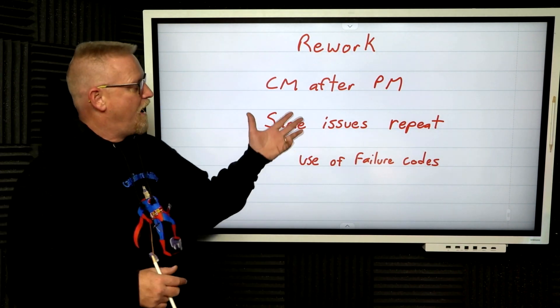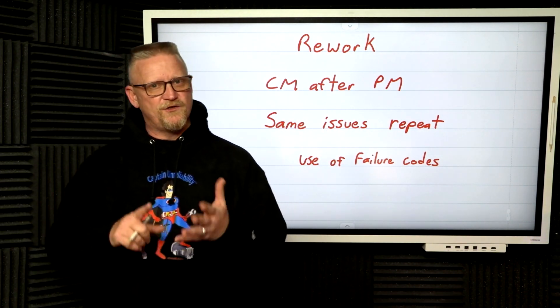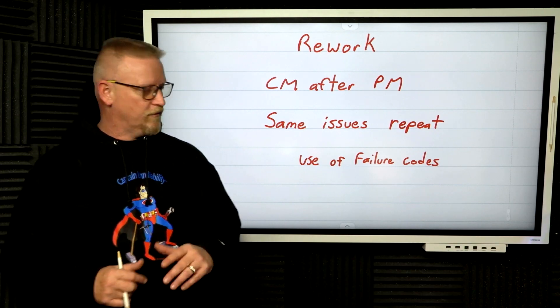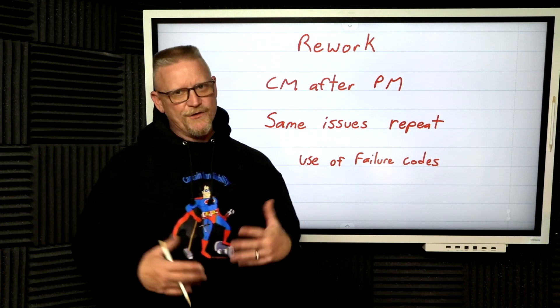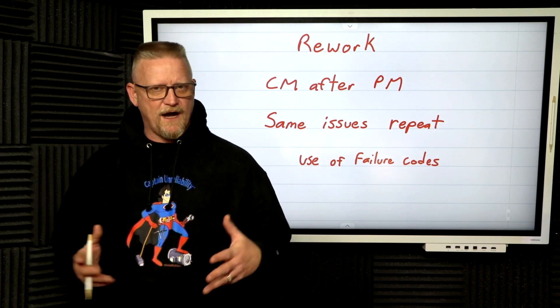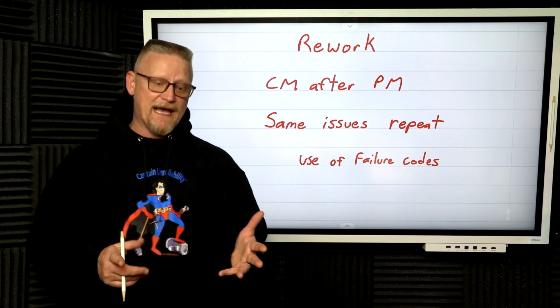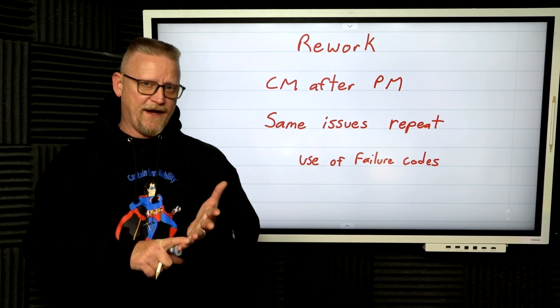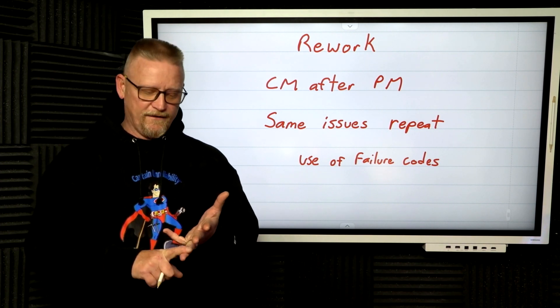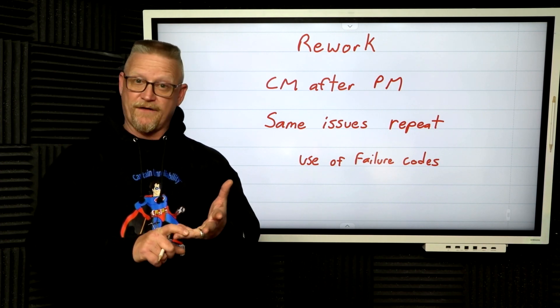What's important about this is making sure each incident is its own work order if possible, and use failure codes so you can document what issues are existing and look at those issues. Again, I go back to the asset after a PM, or I repeatedly replace parts on an asset until I finally solve the issue.